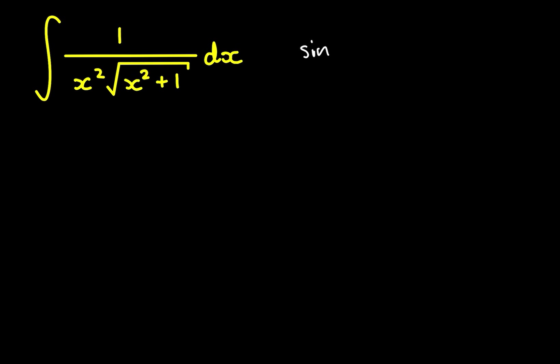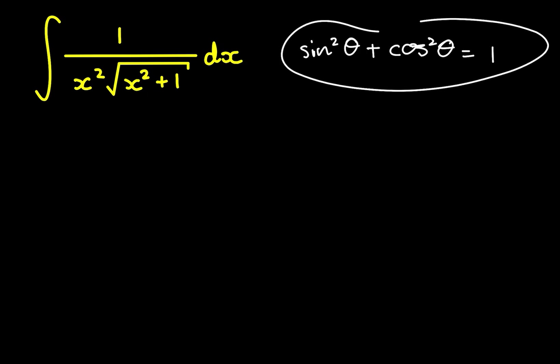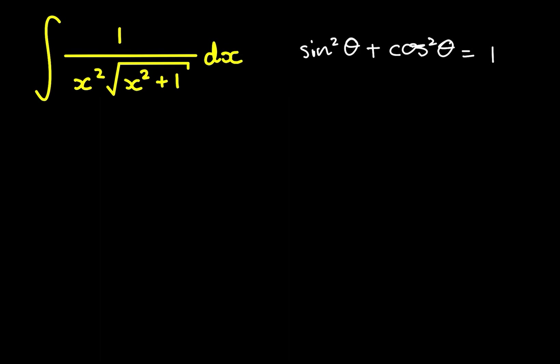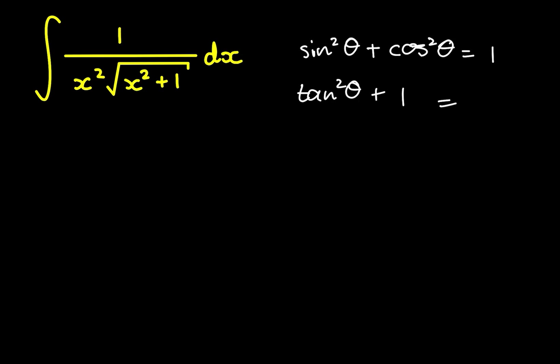One of our identities is sine squared of theta plus cosine squared of theta is equal to 1. I remember the other identity involving secant and tangent by dividing through by cosine in this identity. Sine squared divided by cosine squared is tangent squared, cosine squared divided by cosine squared is just 1, and 1 divided by cosine squared is secant squared.